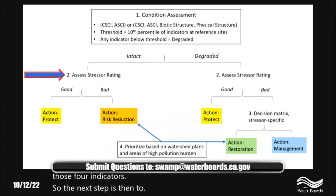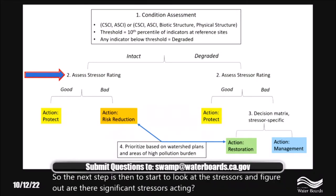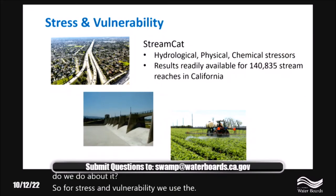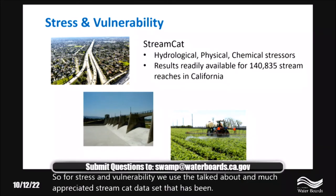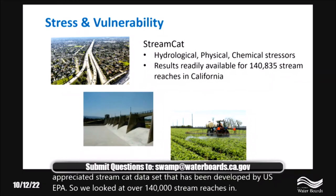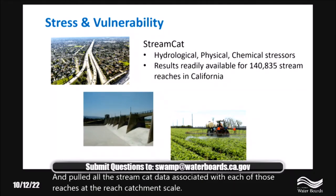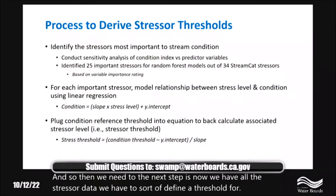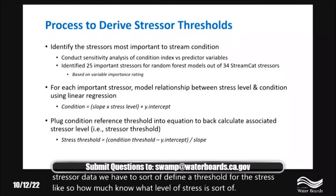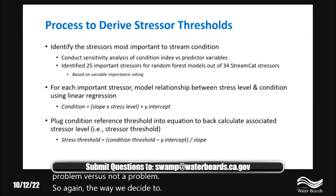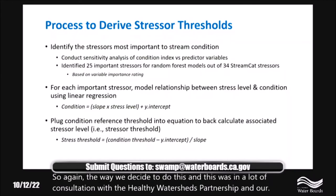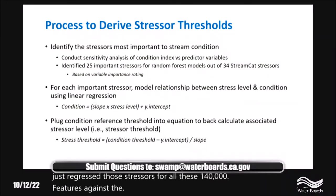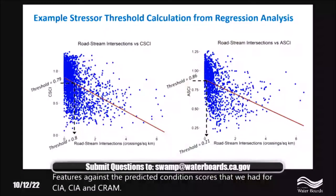The next step is to look at stressors and figure out whether significant stressors are acting on those reaches. For stress and vulnerability, we used the StreamCat dataset developed by US EPA. We looked at over 140,000 stream reaches in California and pulled all StreamCat data at the reach catchment scale. Then we needed to define a threshold for stress — how much stress tips a reach into a problem. We did this by regressing each stressor for all 140,000 reaches against the predicted condition scores for CSCI, ASCI, and CRAM.